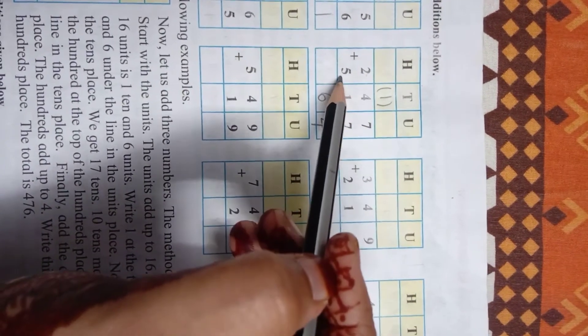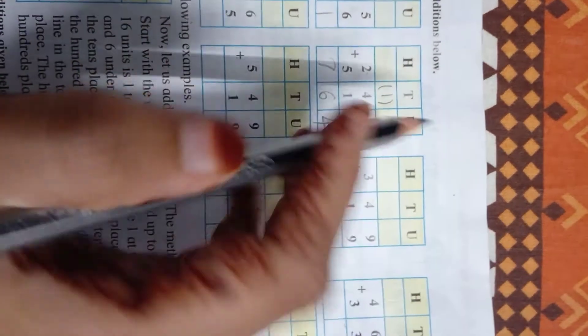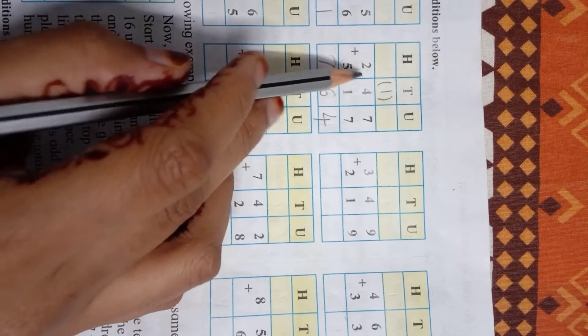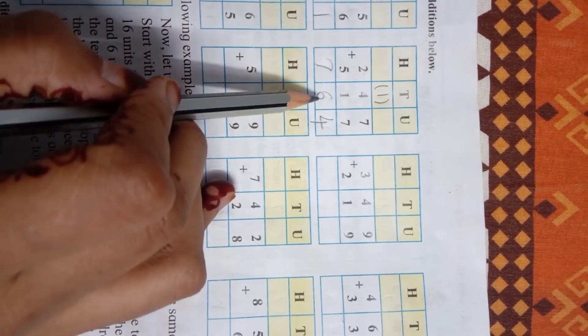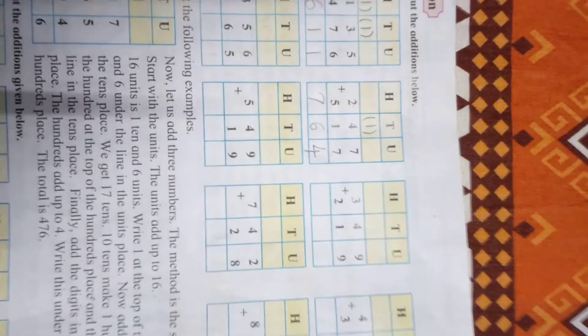And last 2 plus 5, how much? 7. So what is the answer? 764. And you will add these two numbers, then your answer will be 764. Understand how to solve?